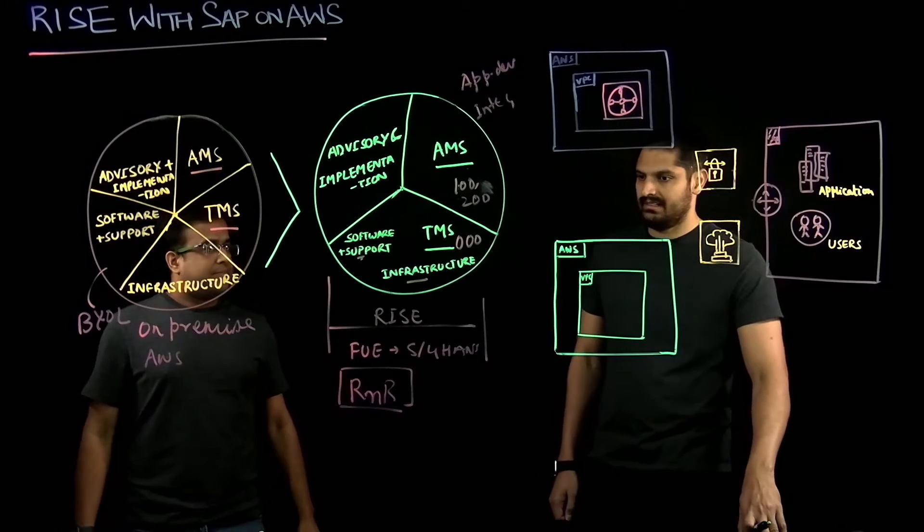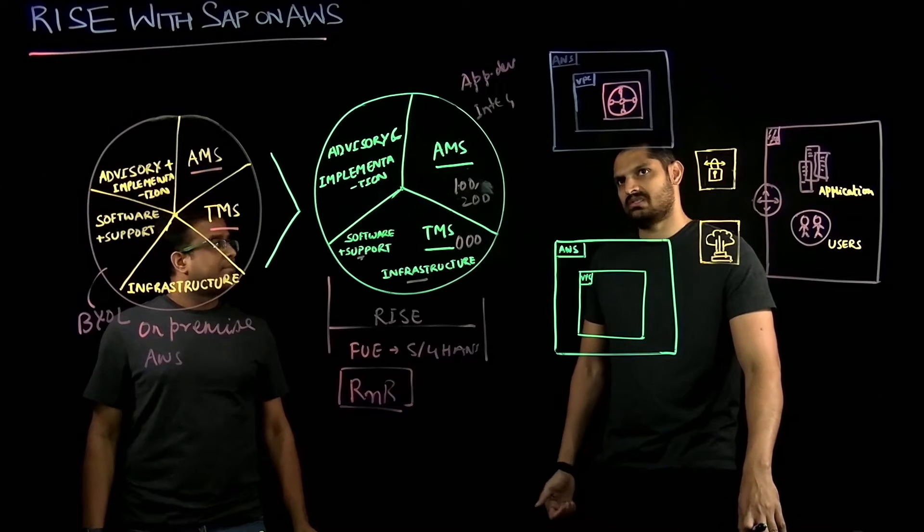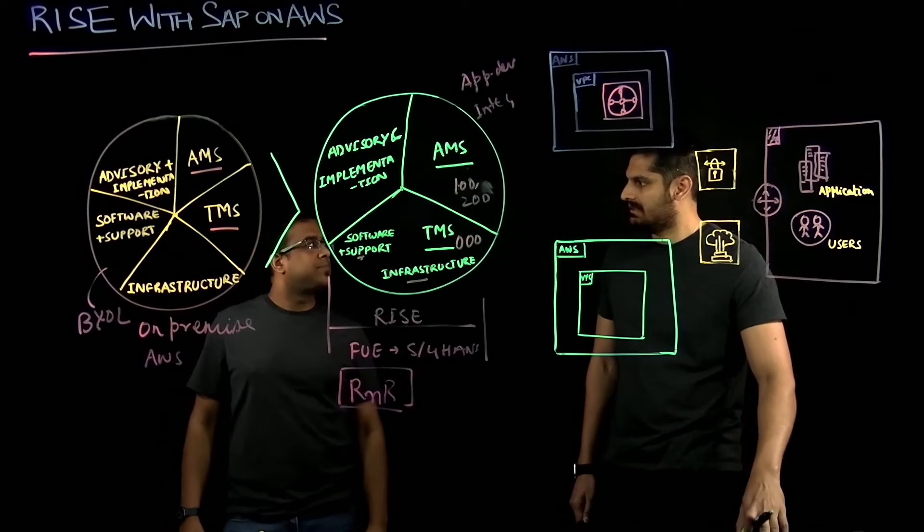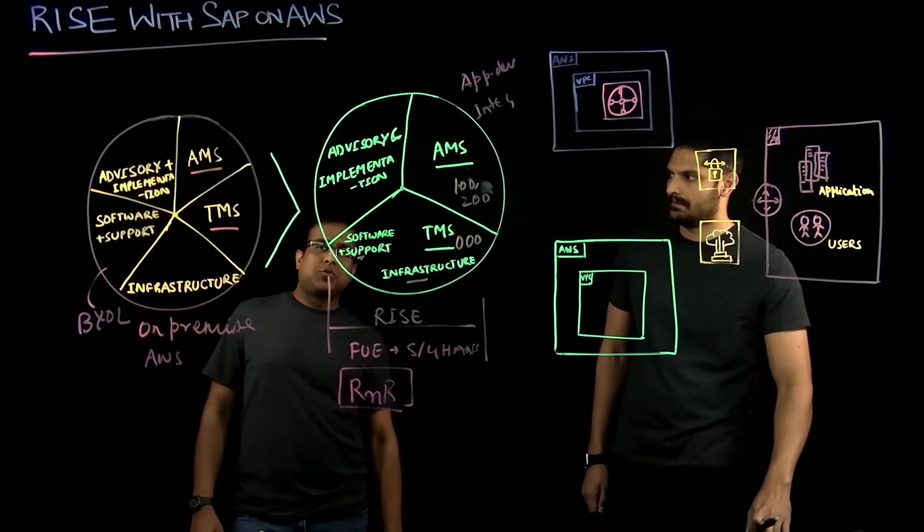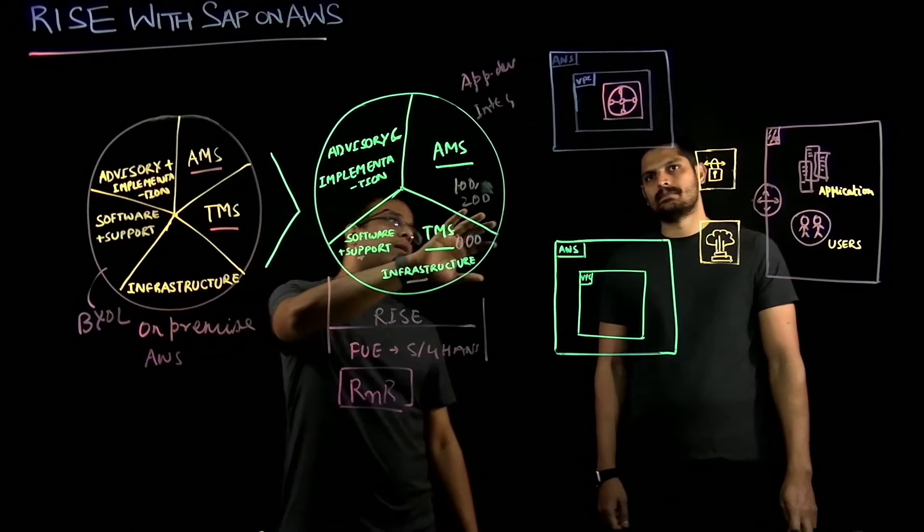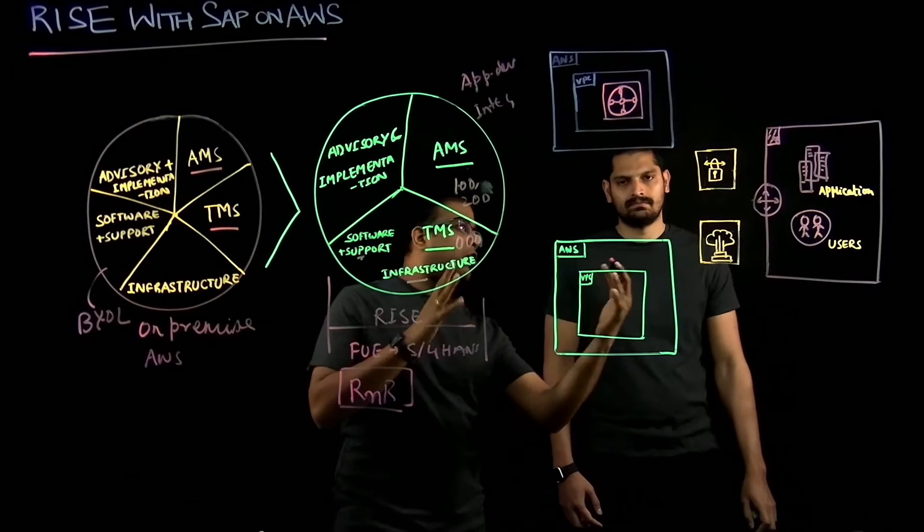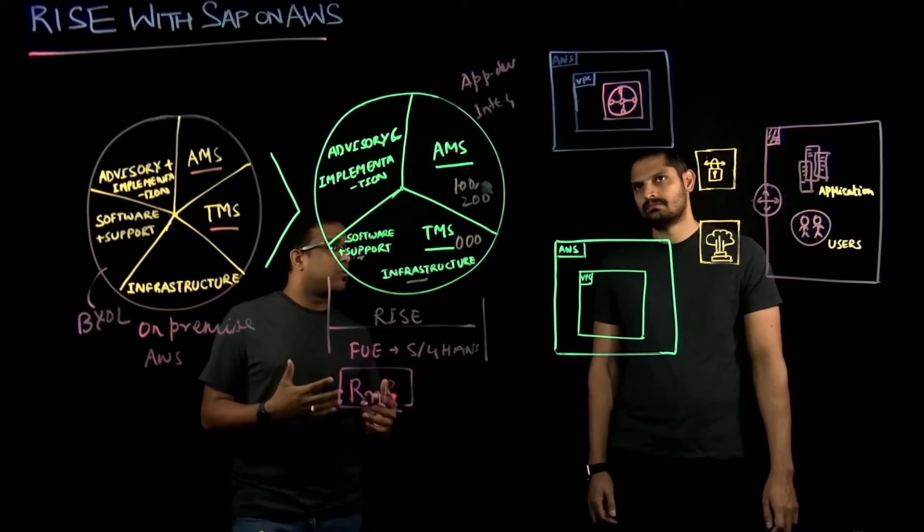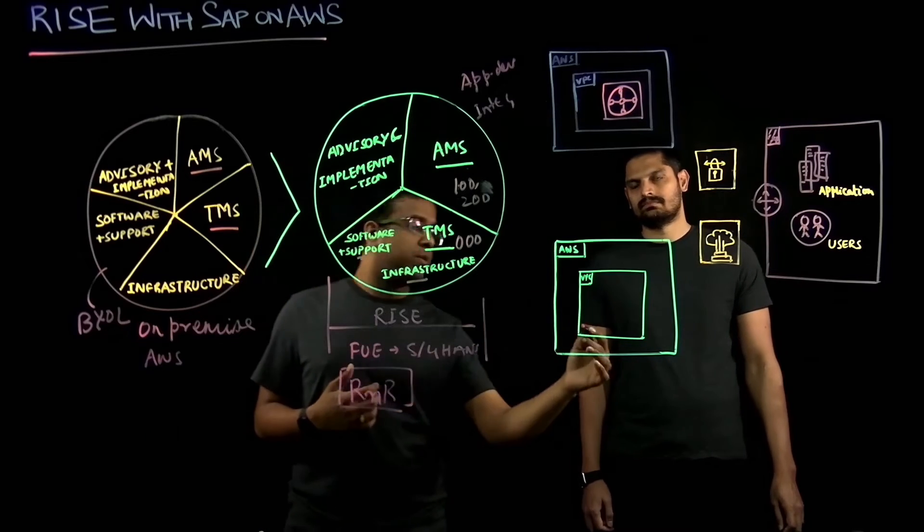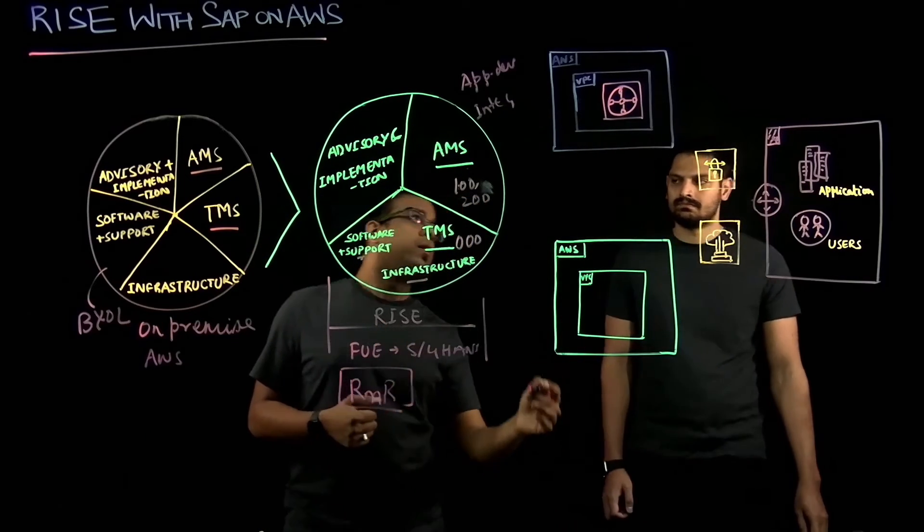Well, thanks for providing these details, Sunny. I have a question. What are the different connectivity patterns for Rise with SAP on AWS? Sure. So, there are different options for a customer who is already running on AWS or they are new to Rise with SAP on AWS or they are new to SAP.